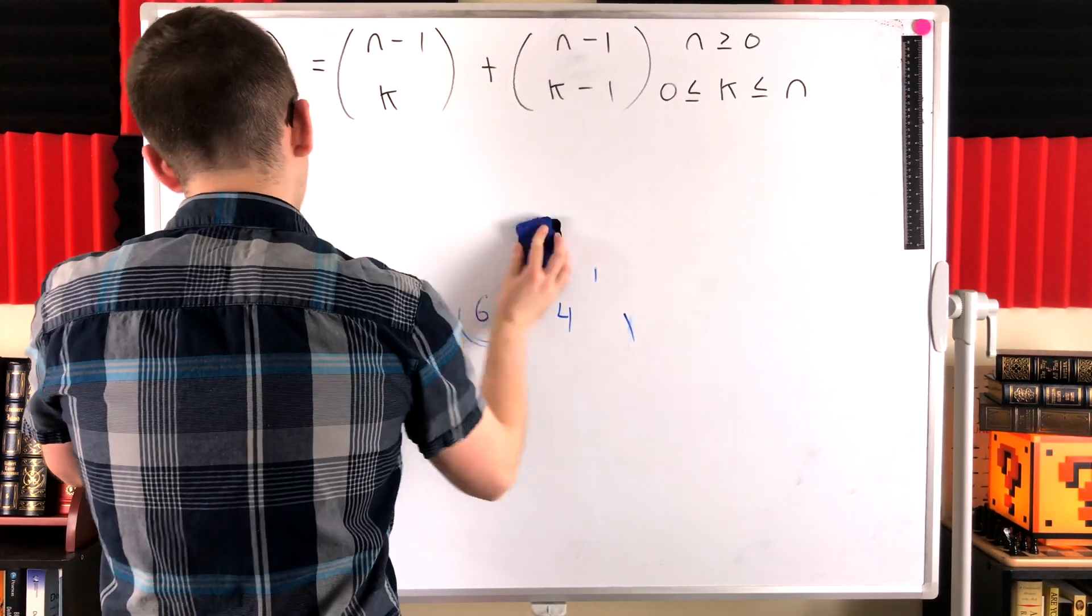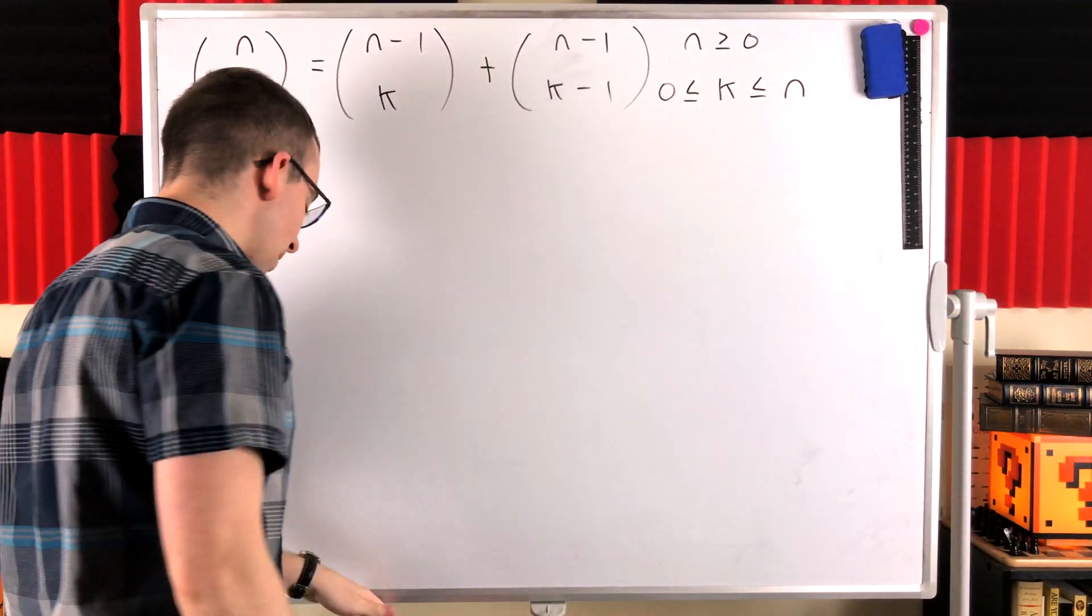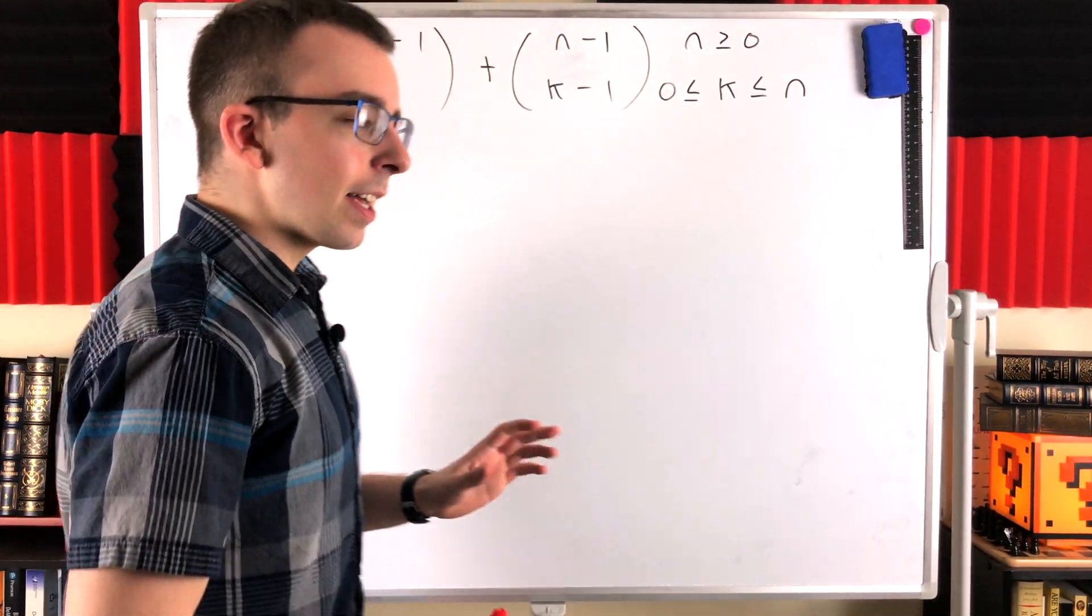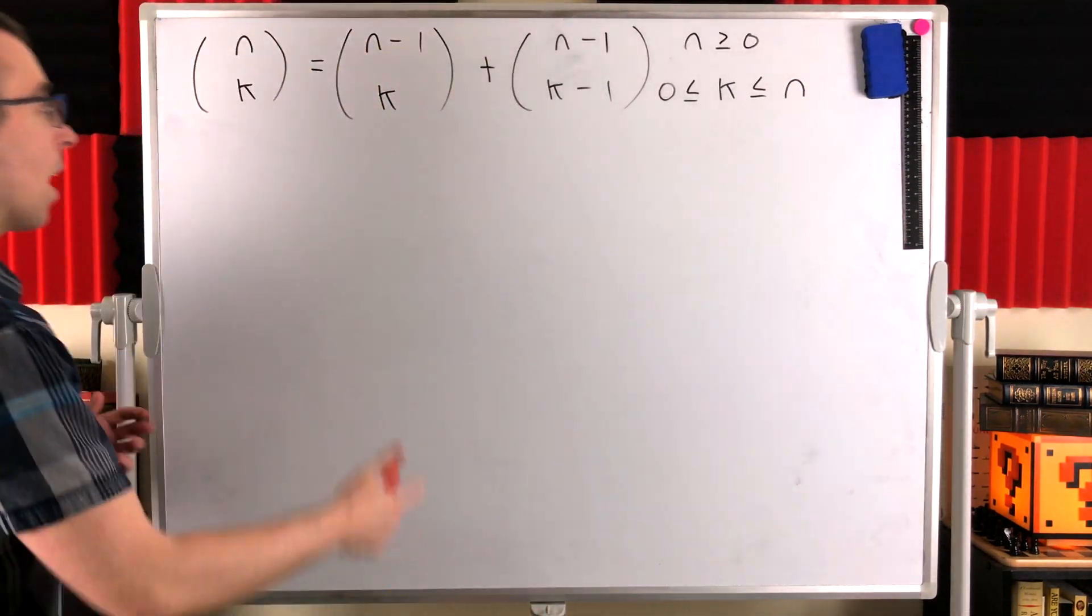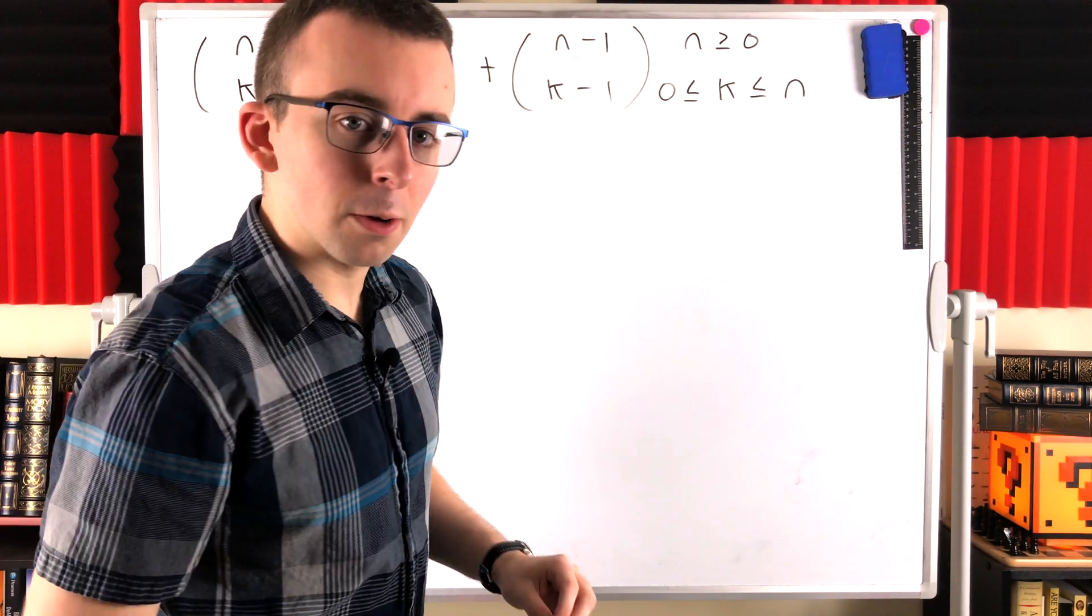So, we might as well go ahead and prove it, since you clicked on the video and that's what I promised. Let's prove it. It can be proven pretty easily by separating our total count, our total number of n choose k, separating it into two separate counts.